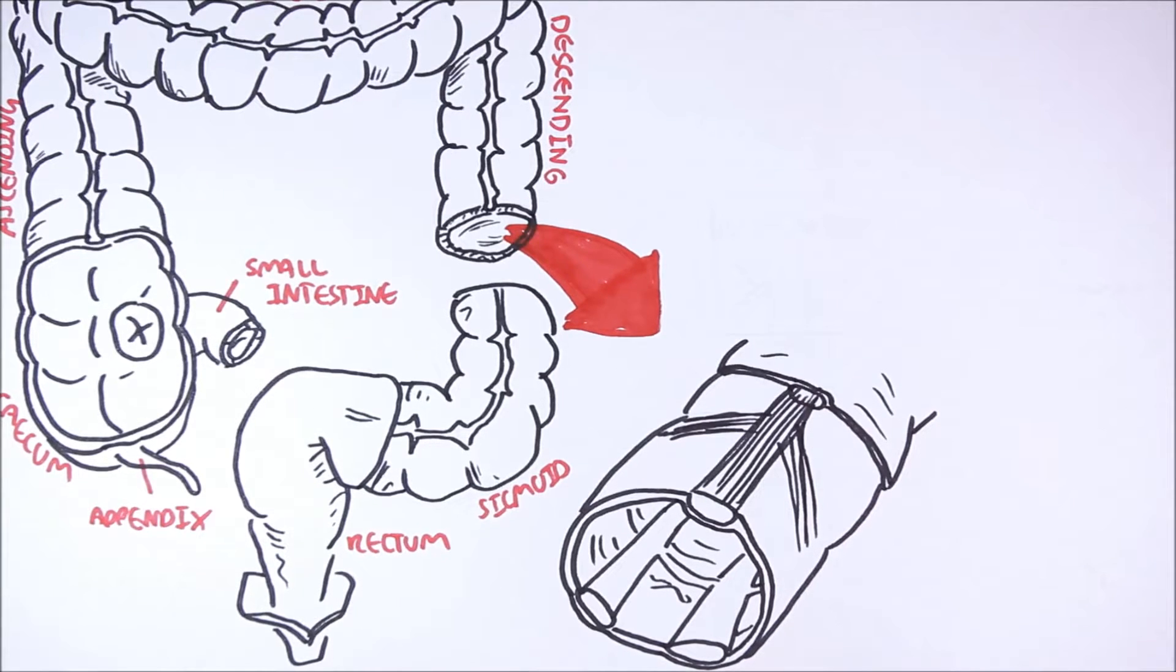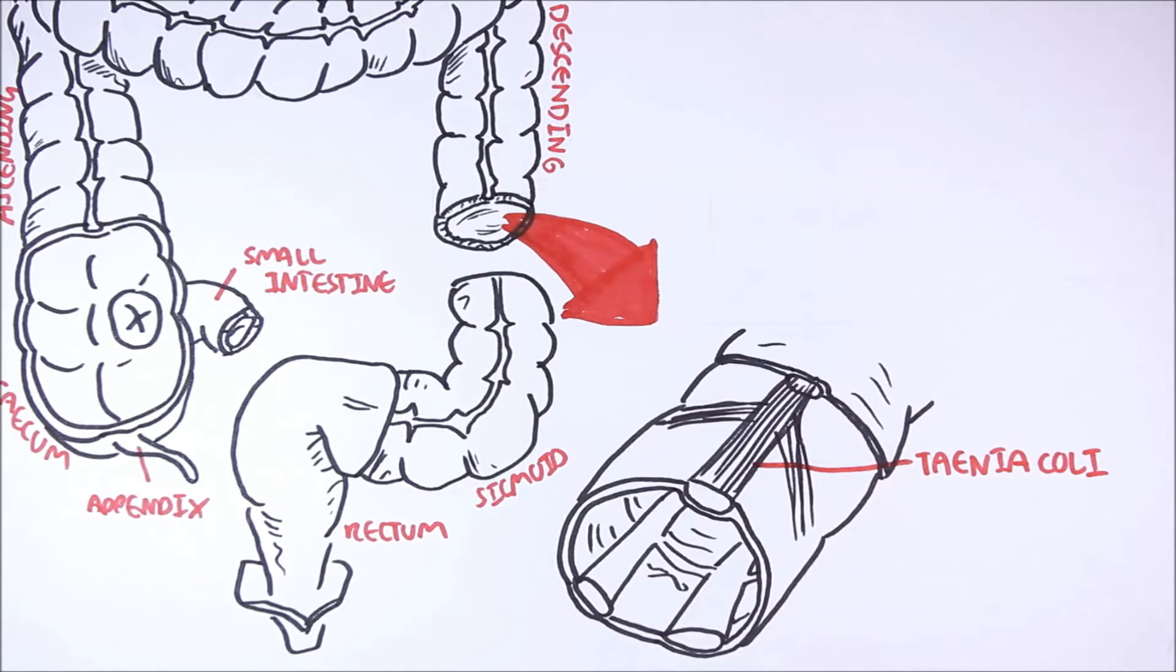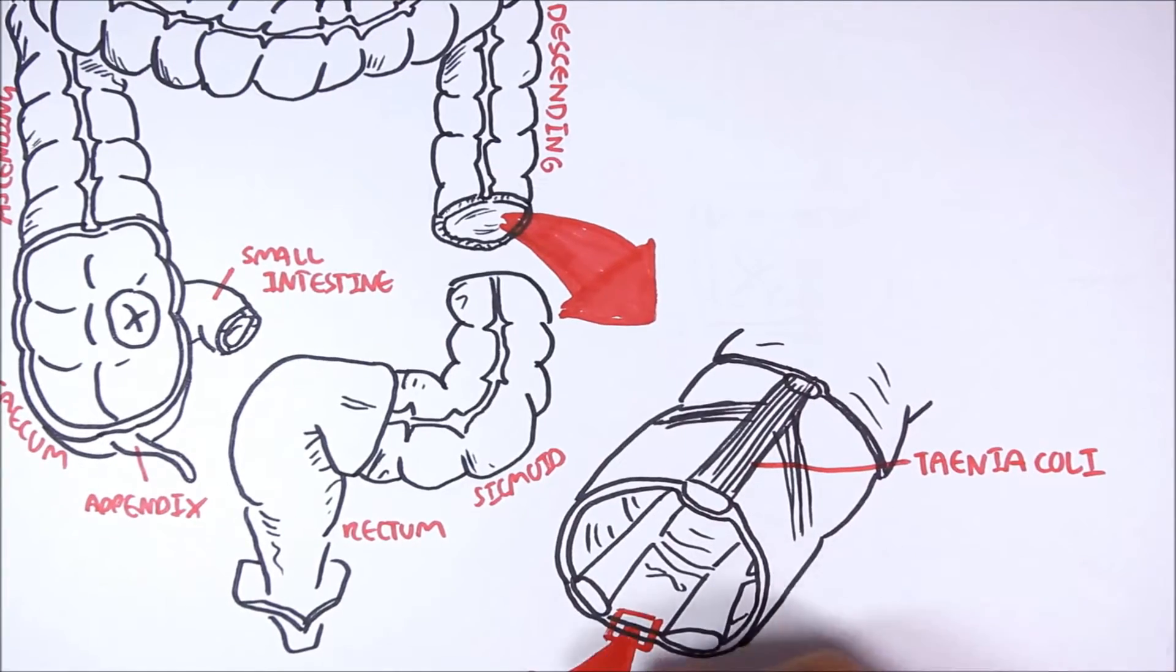These three longitudinal fibers that run along the colon are called taenia coli. The taenia coli runs along all segments, except the rectum.